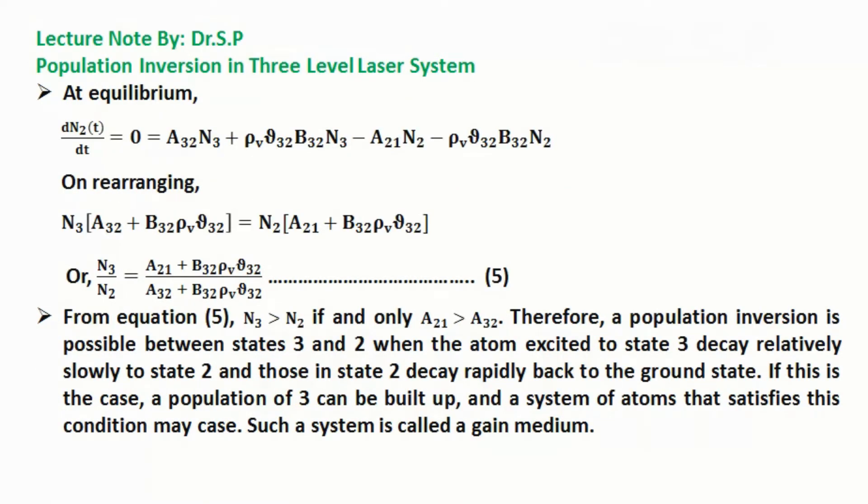At the equilibrium, the rate of change in population is equal to 0, which is mentioned in equation as shown here. On rearranging this equation we get equation 5 as mentioned here.